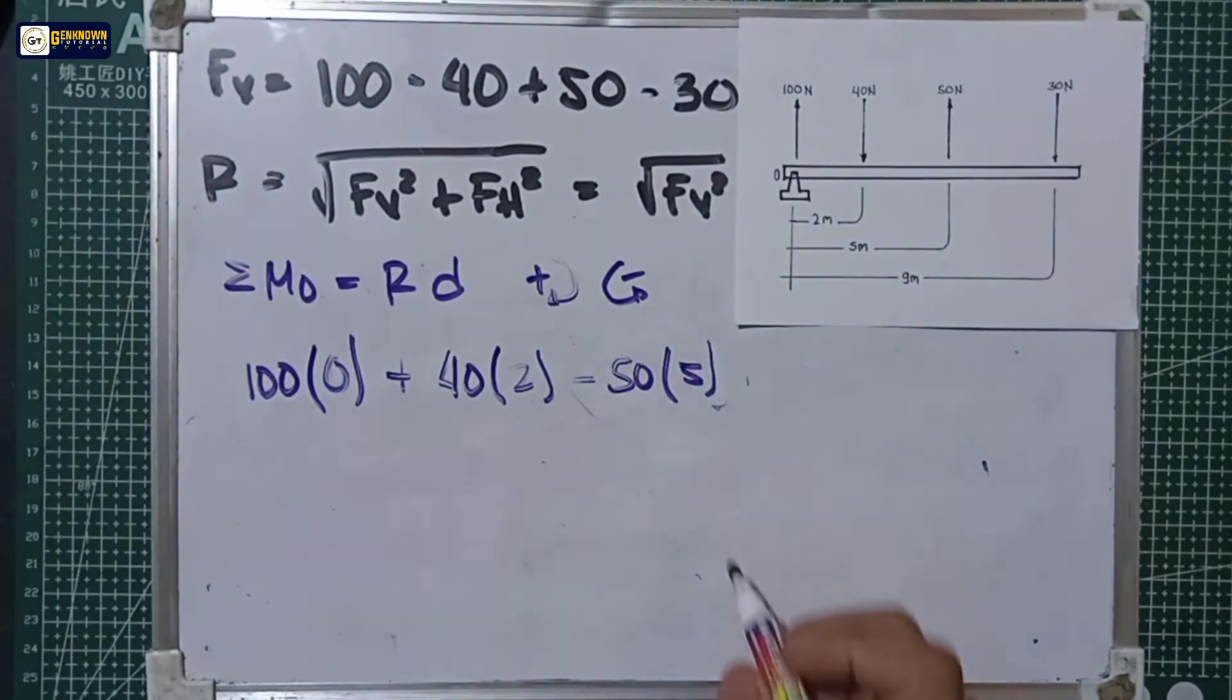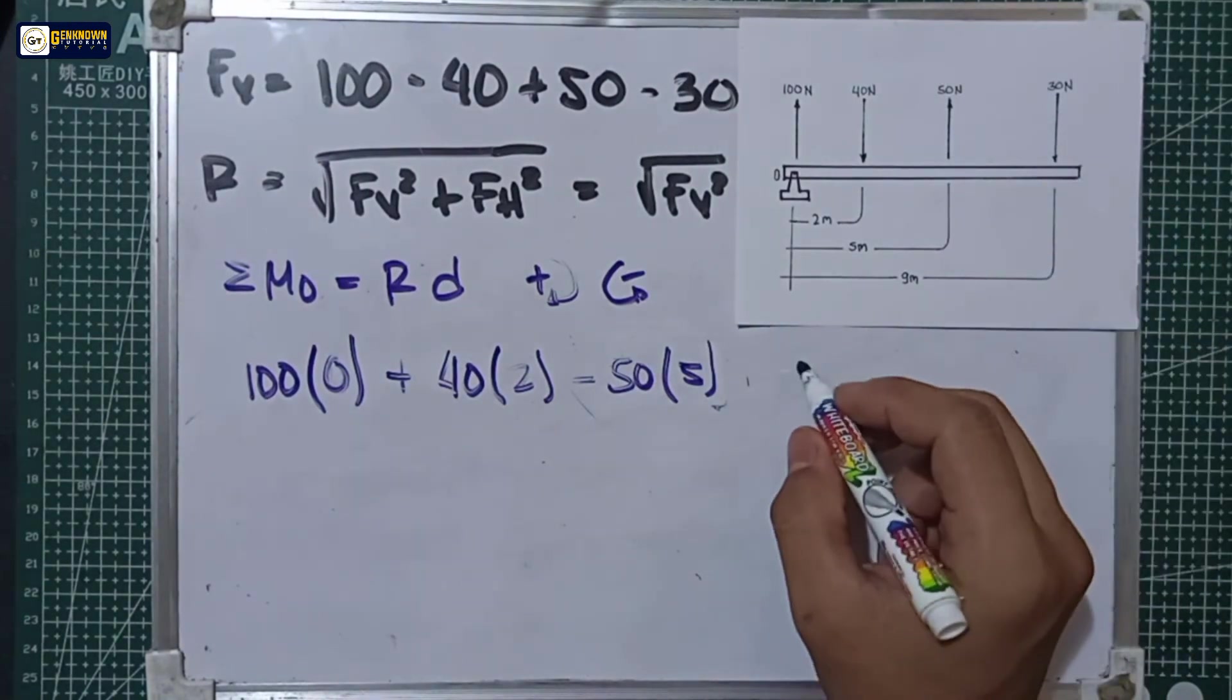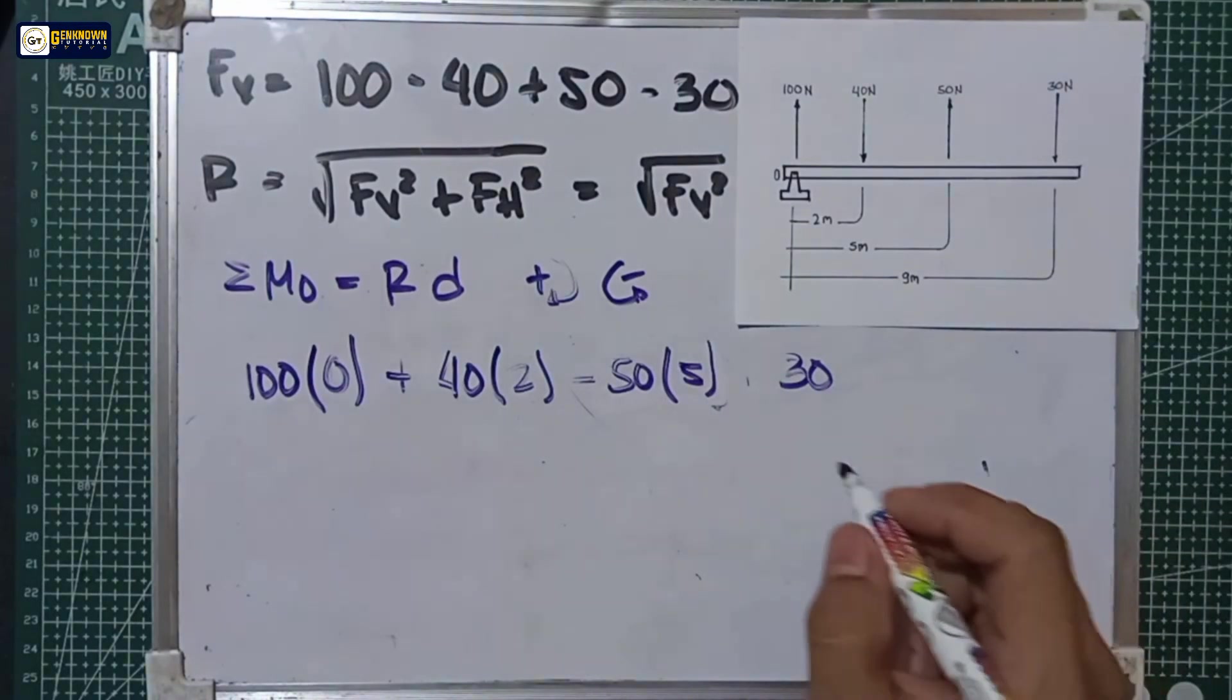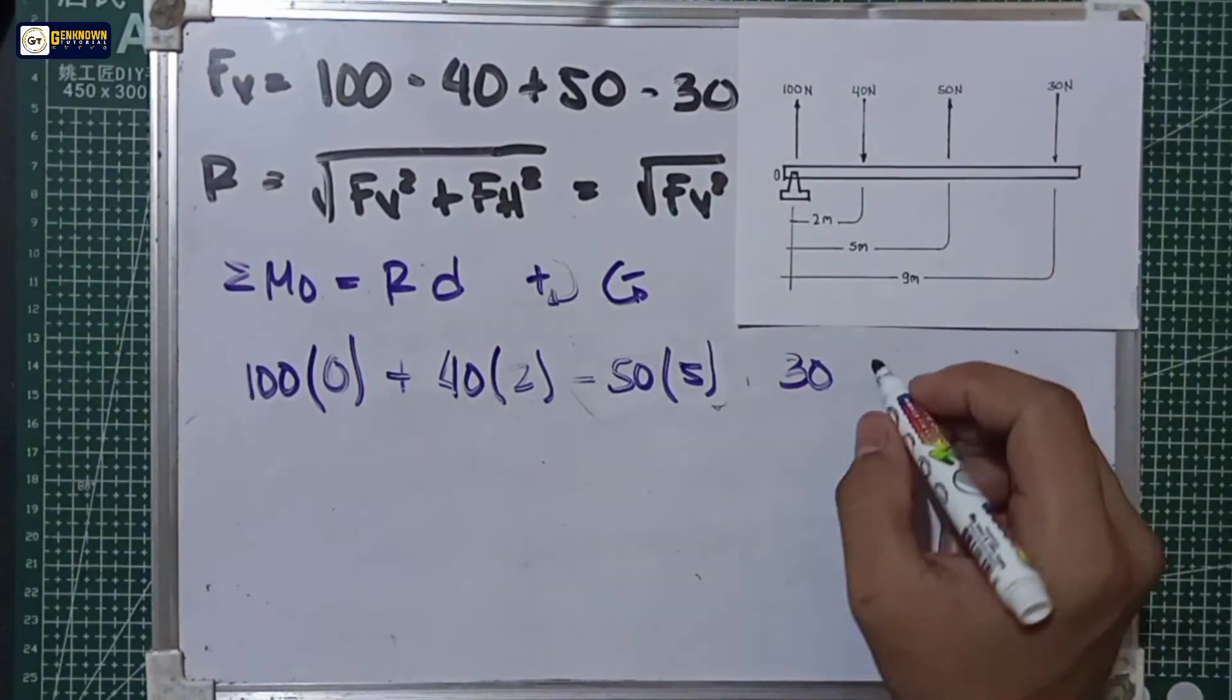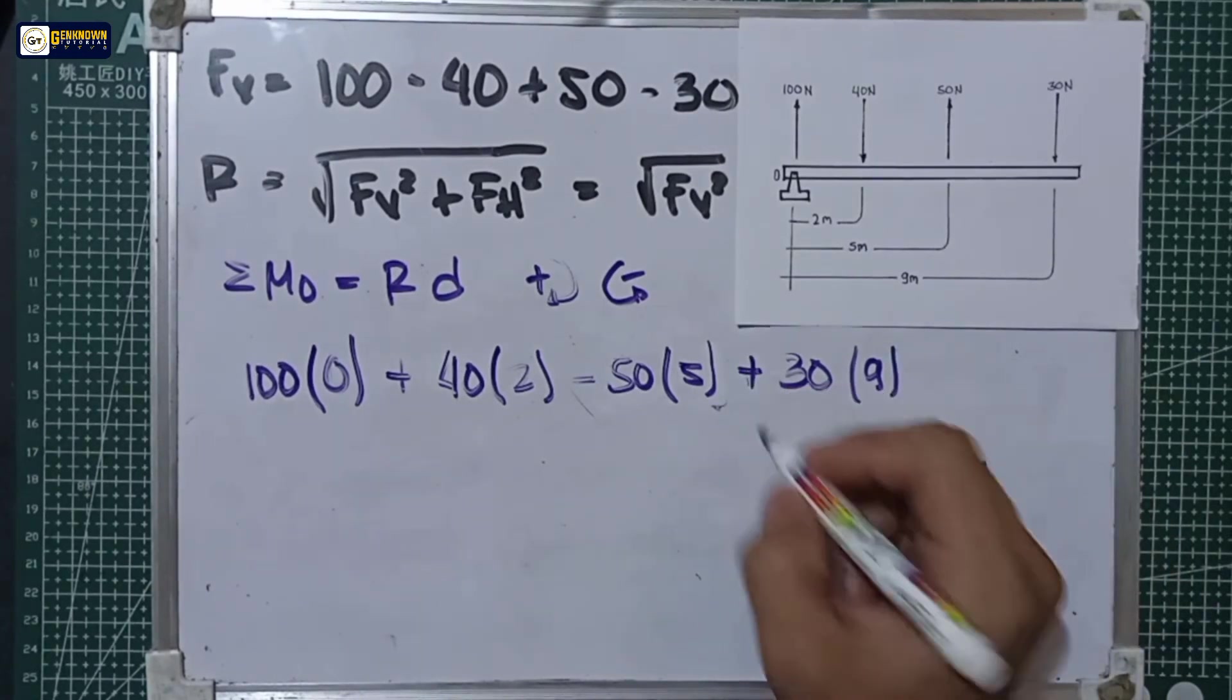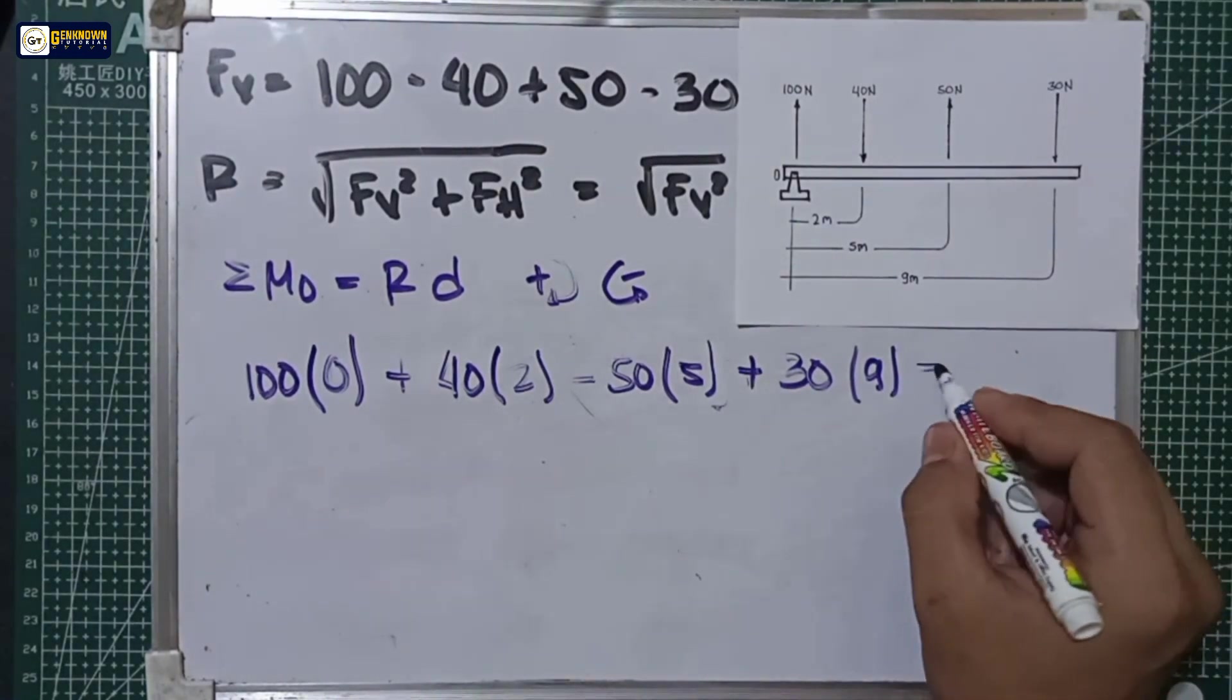And we have also 30 newtons. 30 newtons rotates in a clockwise direction or clockwise rotation, so multiply by 9 meters. This is equal to Rd, so the result is equal to 80 newtons times d.